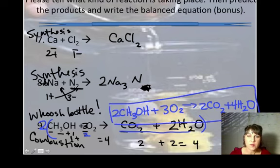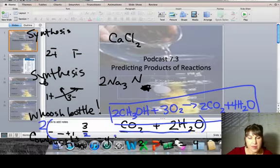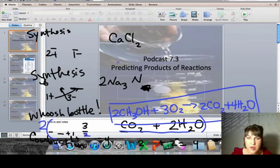So when you're predicting products of reactions, the easiest way to accomplish this is to first identify the type of reaction so that you know how the atoms are going to interact with one another. That's it, folks. Happy predicting. See you in class.